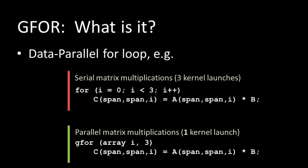gfor is a data parallel for loop. To describe it, it's useful to look at the difference between a standard for loop. In a standard for loop in C++ or any language, you go through the loop doing a matrix vector multiply sequentially. With gfor, all you do to change from a for loop to a gfor loop is add the G in front of that loop. Once you do that, you're able to run all the bodies of all the loops simultaneously in one pass for really fast execution.